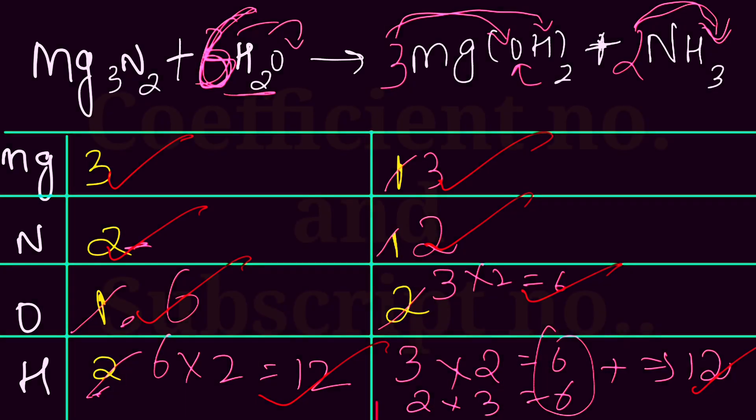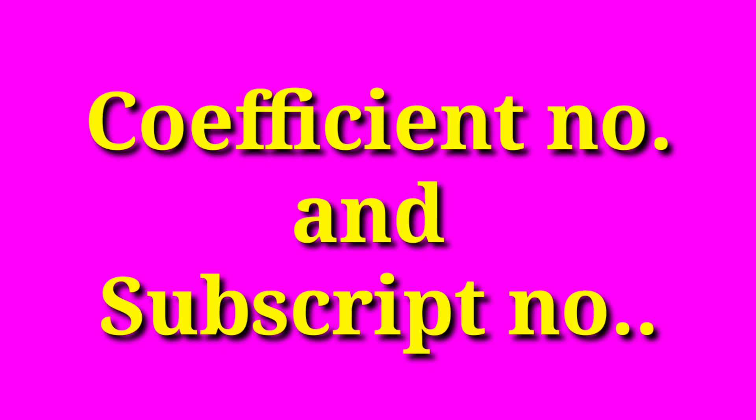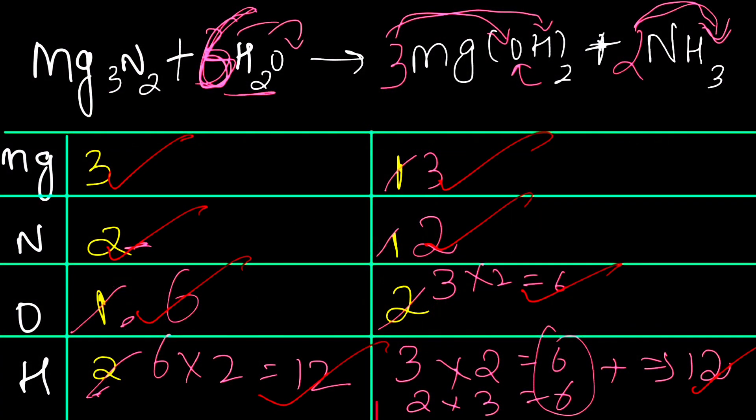So to balance everything, you just have to put the coefficient number and the subscript number. The man from the skit asks how to balance his wife and mother using these concepts. The answer: coefficient number is the big gift, and subscript number is the small gift. Give equal gifts to both — and your problem is solved!